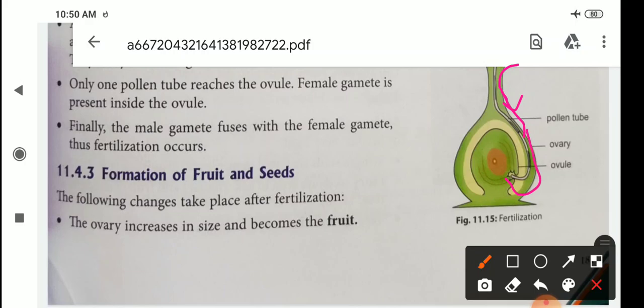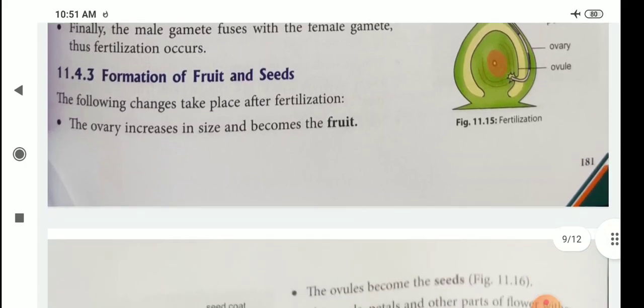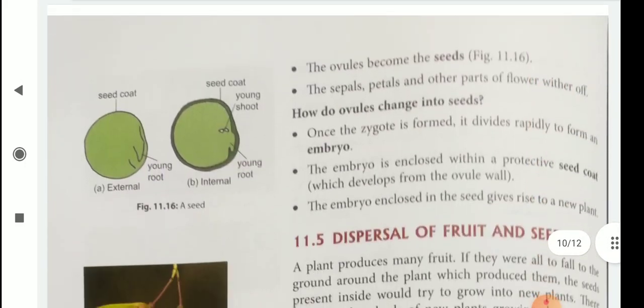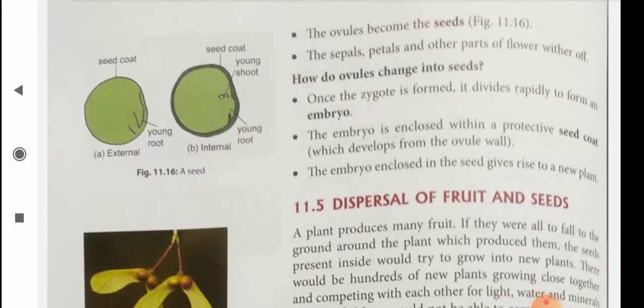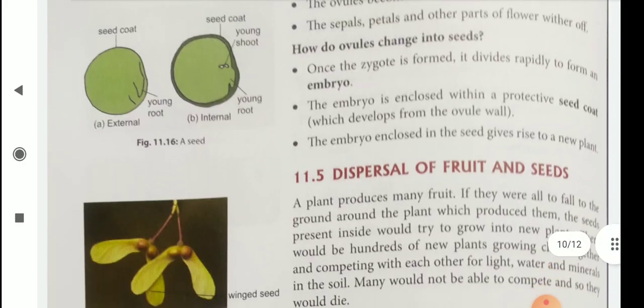Then, formation of fruit and seeds. The following changes take place after fertilization: the ovary increases in size and becomes the fruit; the ovules become the seeds; the sepals, petals, and other parts of the flower fall off. How do ovules change into seeds? Once the zygote is formed, it divides rapidly to form an embryo. The embryo is enclosed within a protective seed coat which develops from the ovule wall. The embryo enclosed in the seed gives rise to a new plant.